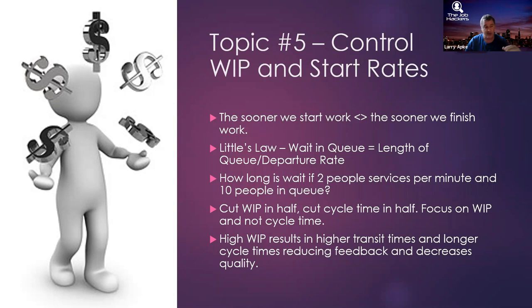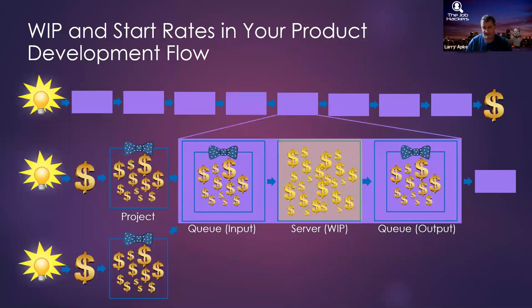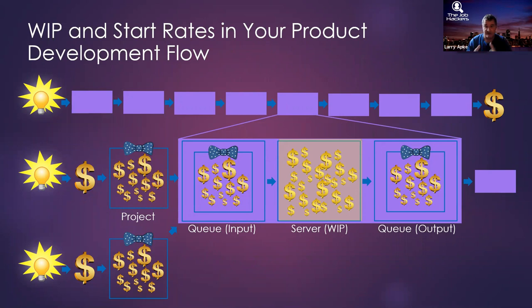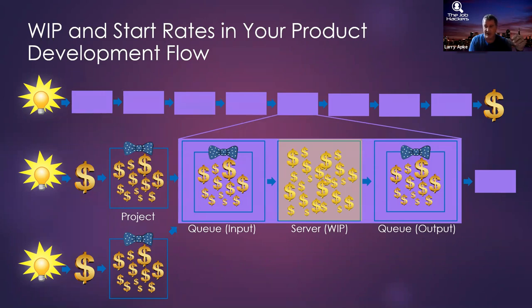Higher WIP rates result in higher transit times and longer cycle times, which decreases feedback and decreases quality, and incurs a high opportunity cost because you're not delivering what you could be. In most waterfall projects, teams are working on a little bit of everything — 10% of this, get stuck, start 10% of something else — until they've got almost everything in their backlog at some various state of progress, but none of it finished.